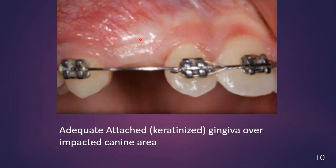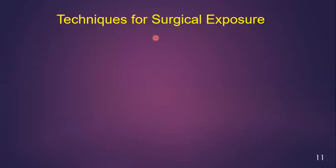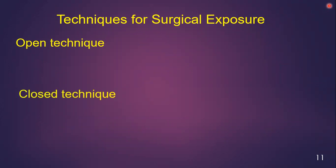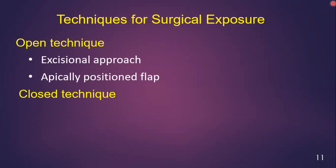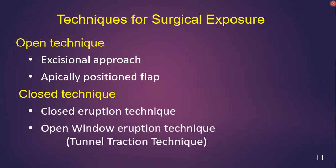Here you can see the sufficient attached gingiva and the bulge created by the crown of the impacted maxillary tooth. When you create an apically positioned flap, a sufficient amount of attached gingiva will be available, so the success rate is 100%. There are two types of techniques: the open technique and the closed technique. The open technique includes the excisional approach and the apically positioned flap. The closed technique includes the closed eruption technique and the open window eruption technique.